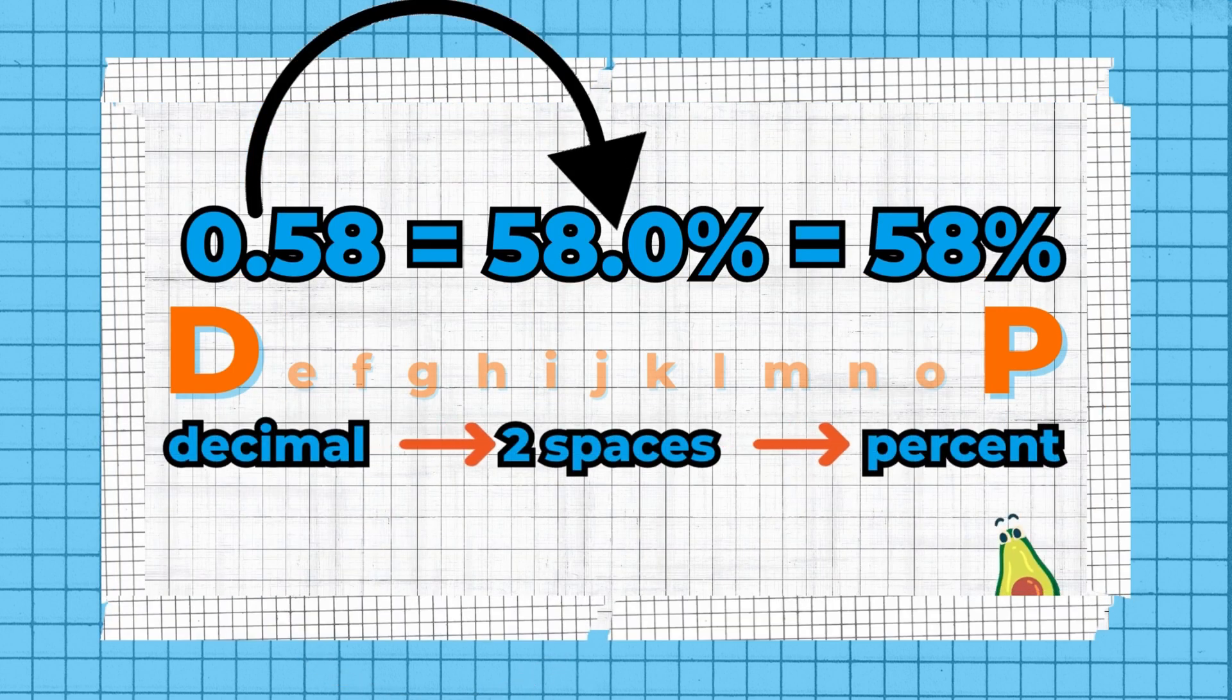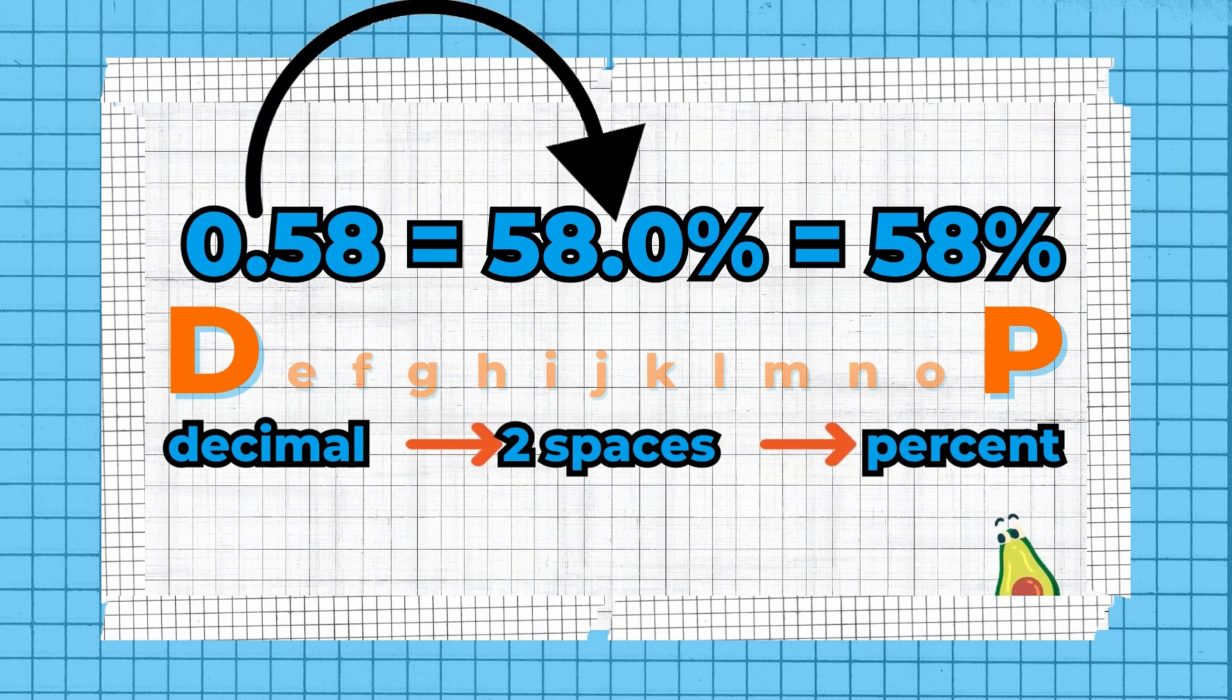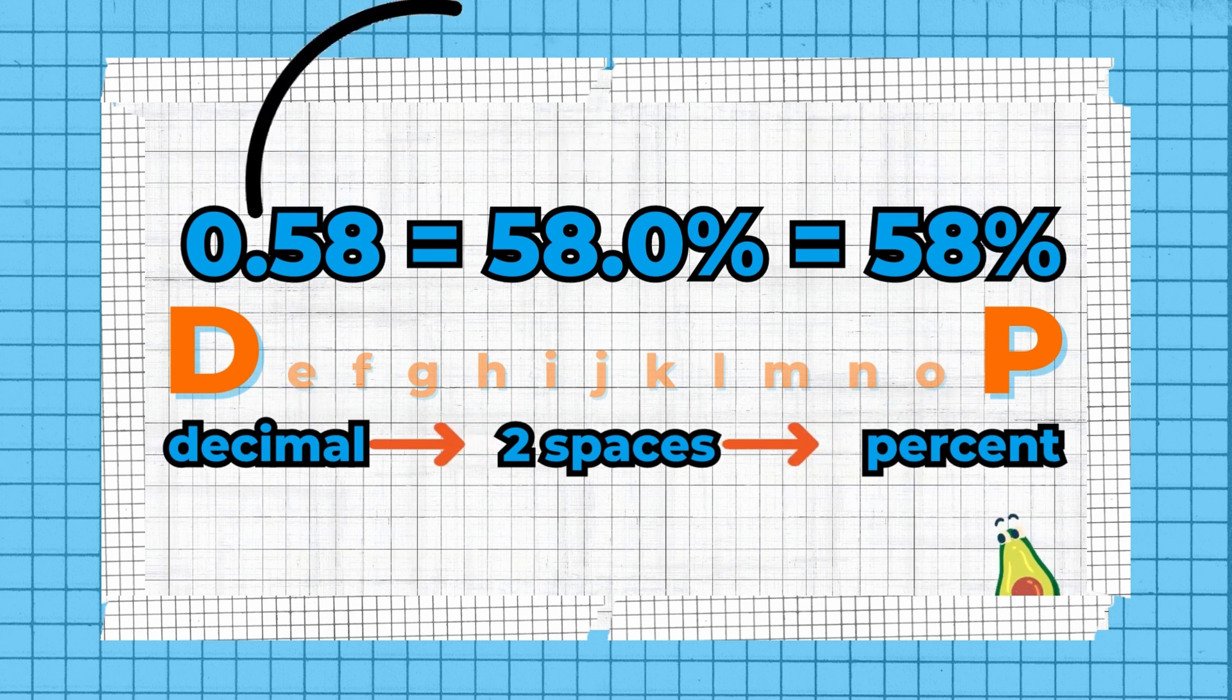And if you want to convert from a decimal to a percent, you're going to move the decimal to the right two spaces. Again, look at the alphabet. D comes before P. So go to the right, two spaces.